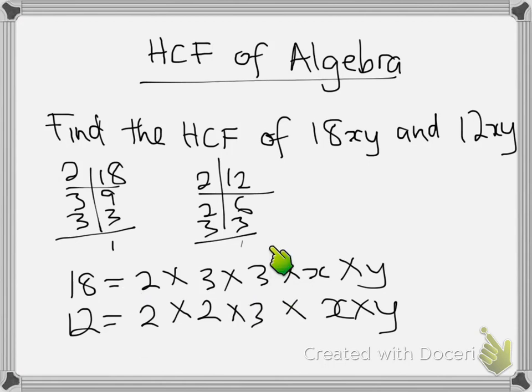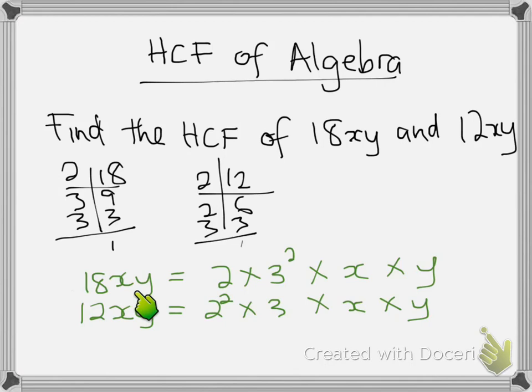Therefore, the next step, write these factors in index form. Now consider this: 18xy is written as these are the prime factors for 18, then these terms are taken as x and y. Same here with 12: prime factors of 12, 2 squared times 3, then these are the algebraic terms.